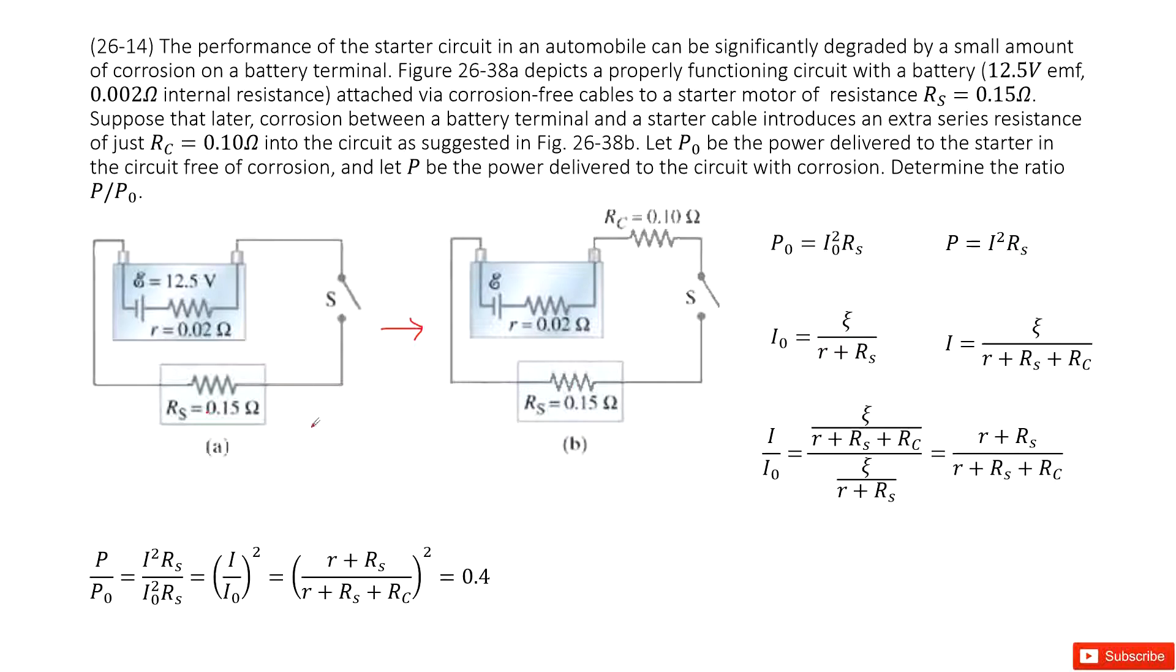Initially, how can you get the current? Use the emf divided by the total resistance, the external resistance plus the internal resistance. So it is R plus RS. This is internal resistance plus the external resistance.